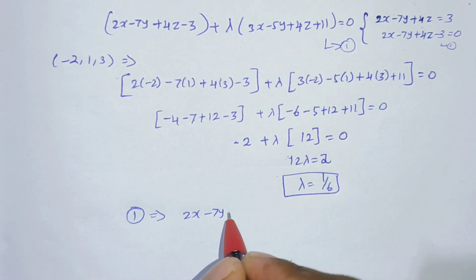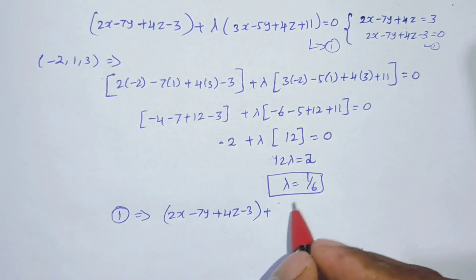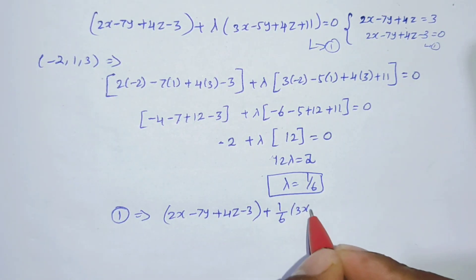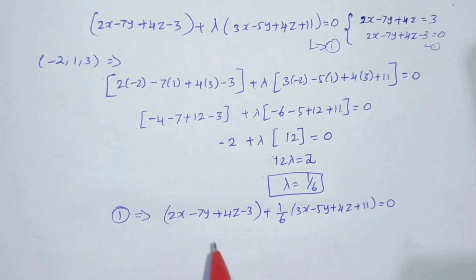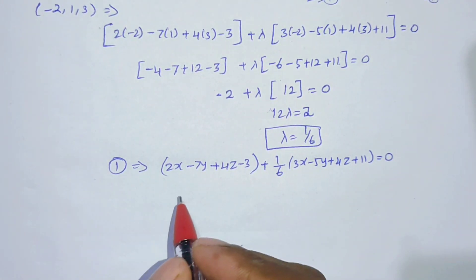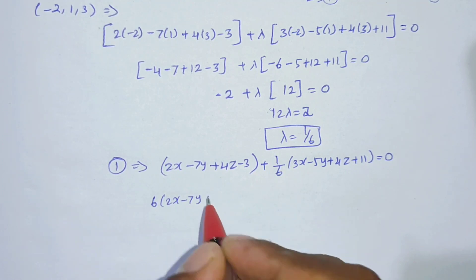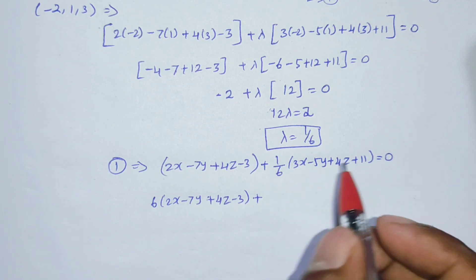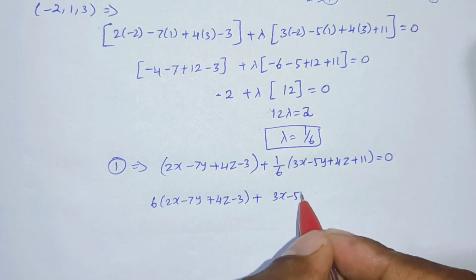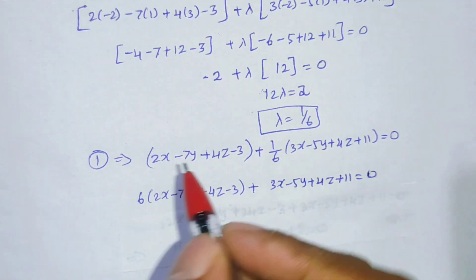Substituting lambda equals 1/6 back: 2x minus 7y plus 4z minus 3 plus (1/6)(3x minus 5y plus 4z plus 11) equals 0. Multiplying through by 6: 6 into 2x minus 7y plus 4z minus 3 plus 3x minus 5y plus 4z plus 11 equals 0.